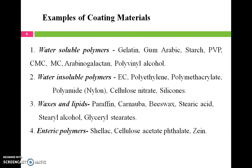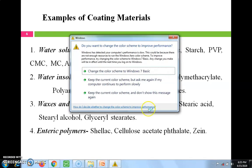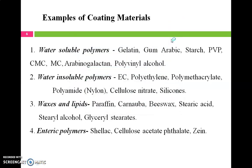A number of coating materials can be used for microencapsulation, similar to those used in tablet coating. According to their properties they are classified: first, water-soluble polymers — when we want to coat particles for taste masking, odor masking, or to improve elegance, we use water-soluble polymers like gelatin, gum arabic, and starch. When we want to sustain action or retard drug release, we use water-insoluble polymers like ethyl cellulose, polyethylene, and polymethacrylates.